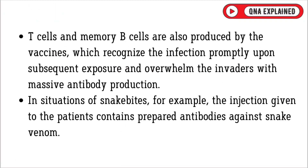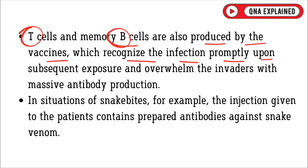T cells and memory B cells are also produced by the vaccines, which recognize the infection promptly upon subsequent exposure and overwhelm the invaders with massive antibody production.